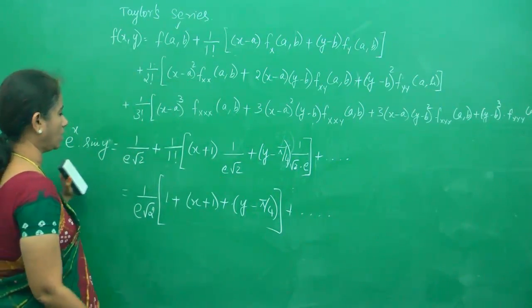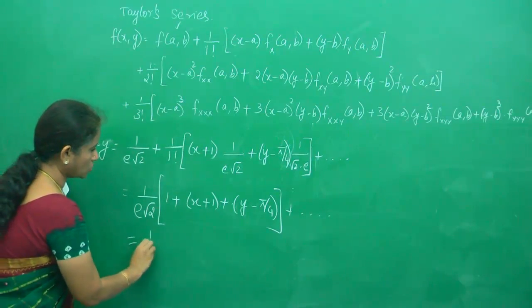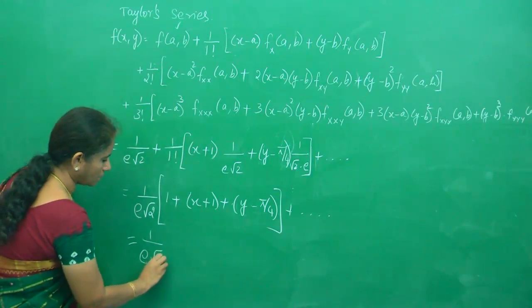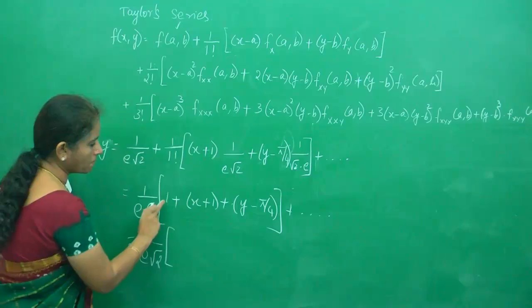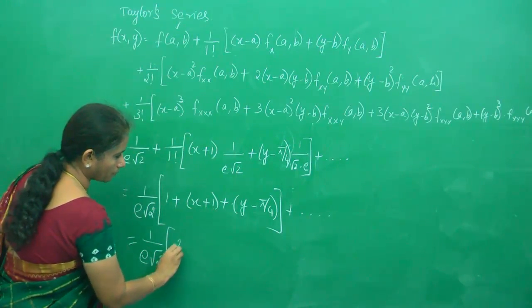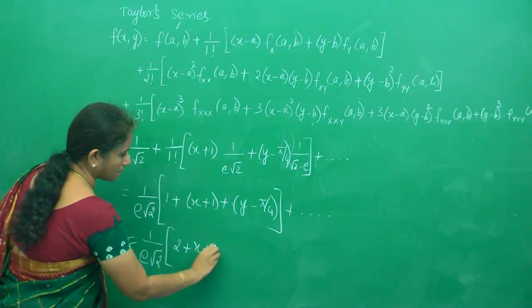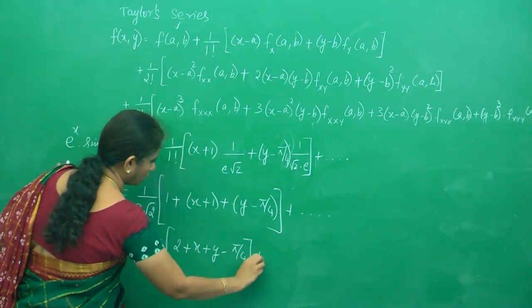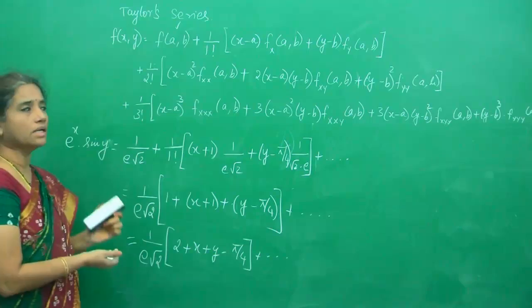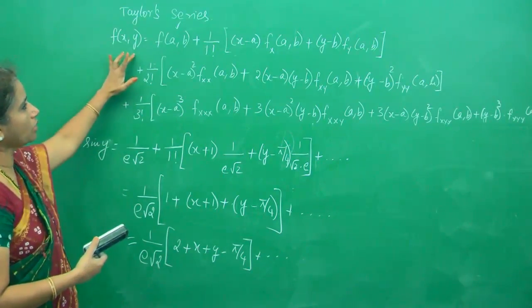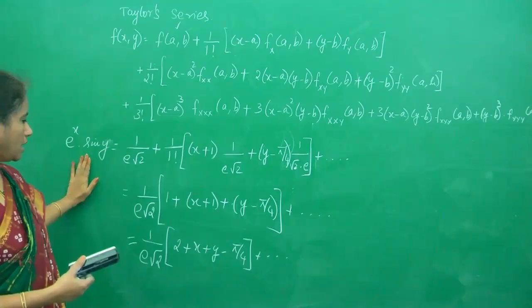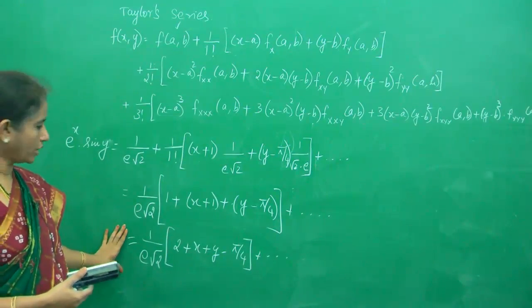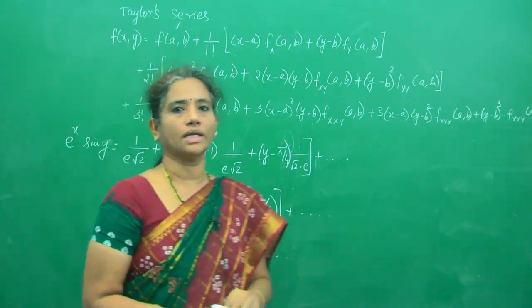Do not forget to put '+ ...' because it goes on. We are doing just the first-degree terms. So this is 1/(e√2) [1 + (x + 1) + (y - π/4)] + .... We are asked to expand up to the first-degree terms of e^x sin y, so we have completed it. Hope you understood the problem clearly.